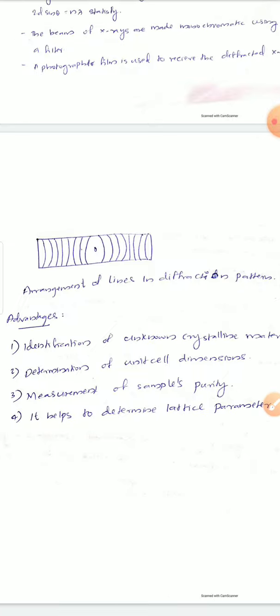The advantages of the powder method include: identification of unknown crystalline material, determination of unit cell dimensions, measurement of sample purity, and determination of lattice parameters. Both the powder method and the rotating crystal method can be used to identify unknown crystalline material.